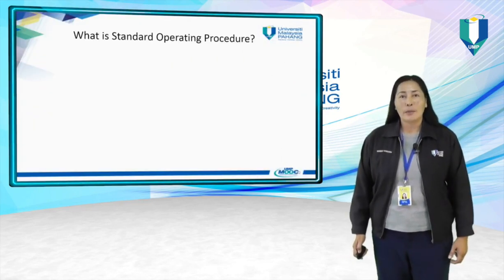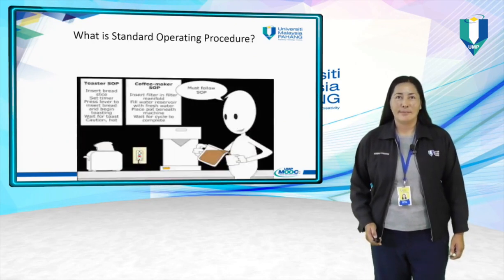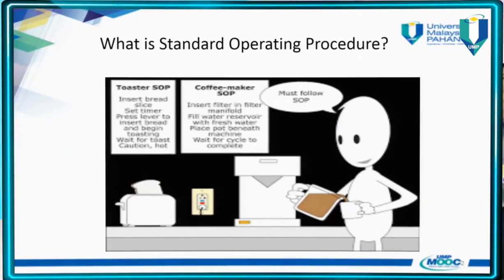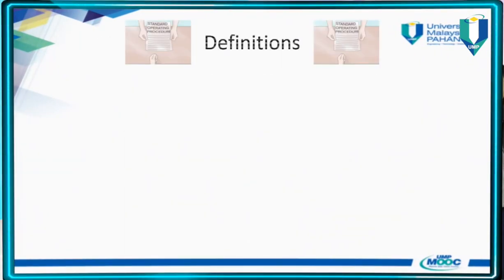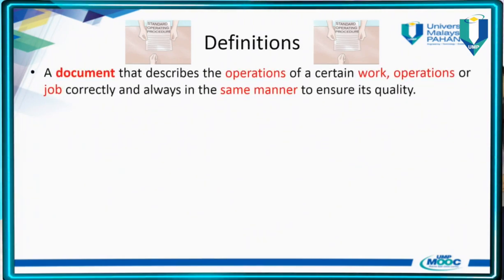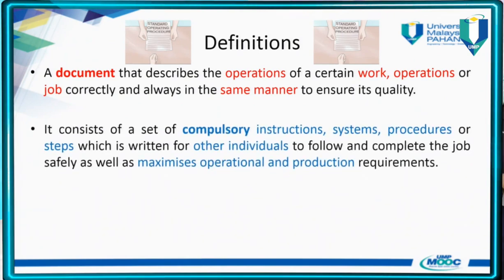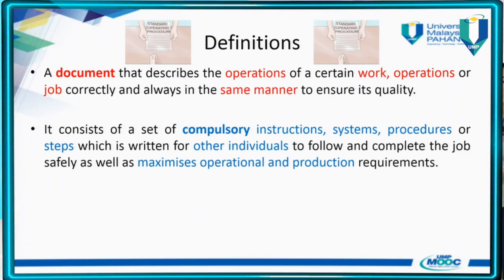What is Standard Operating Procedure or SOP? An SOP is a type of document that describes the operation of a certain work, so that the work will be done in a certain way — that is, everybody will do the work in the same way. A Standard Operating Procedure is made up of compulsory instructions, systems and procedures, or steps that people can follow in order to complete a work or an action in the same manner.